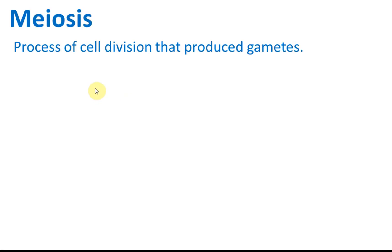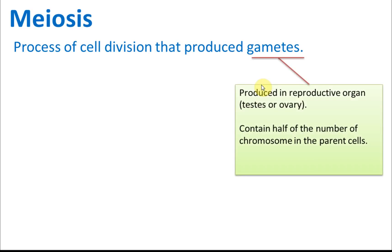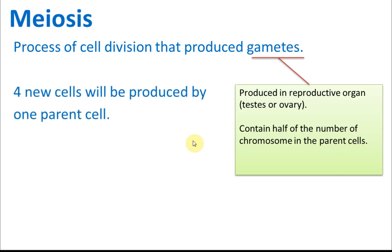Meiosis is the process of cell division that produces gametes. Gametes are produced in reproductive organs like the testis or ovary, and they contain half the number of chromosomes found in the parent cells.